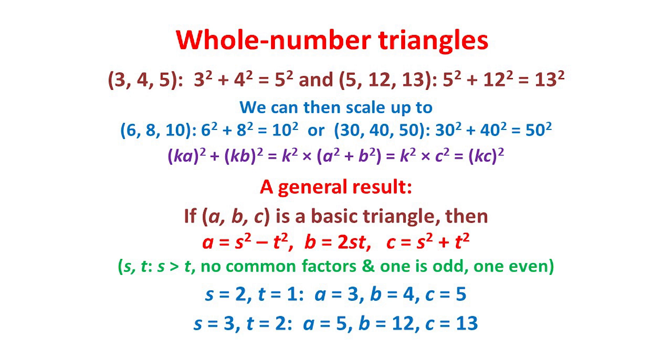Notice that if we scale a right-angled triangle with sides a, b, and c by a factor of k, to give one with sides ka, kb, and kc, then (ka)² + (kb)² is equal to k² × (a² + b²), which is just k² × c², or (kc)². So the Pythagorean result still holds for the scaled-up triangle.